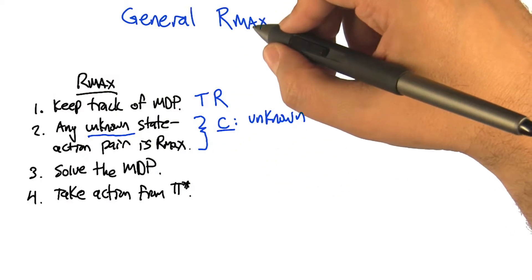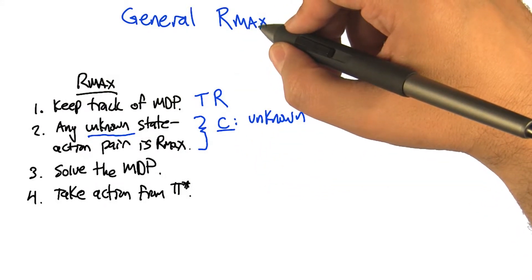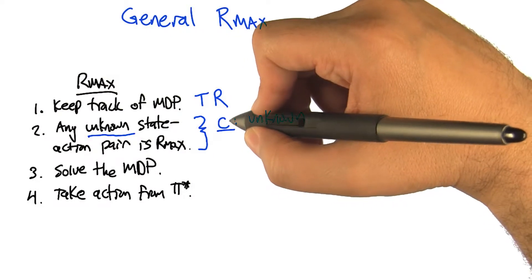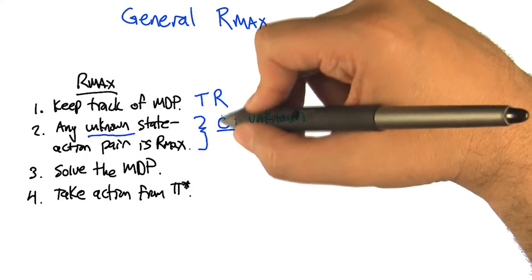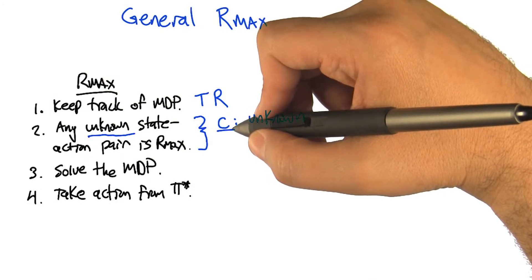Is that C different for every state action pair? That's a good question. So I want to first give the parametrized algorithm. Then what we have to do is, if we're going to say that this algorithm is efficient, we have to derive some value for C and show that it's not too big and not too small, but just right.